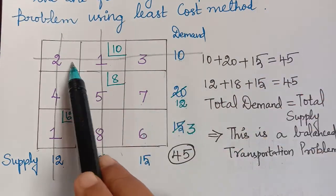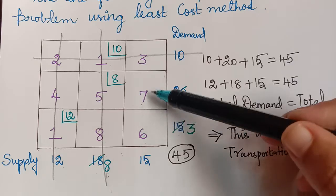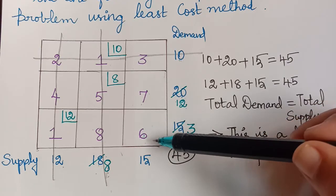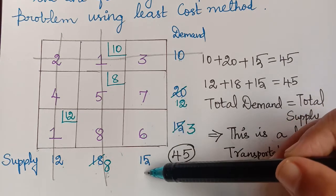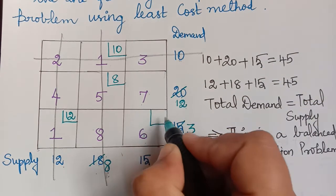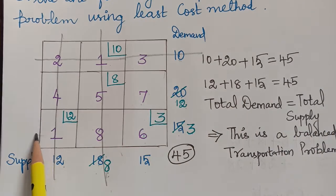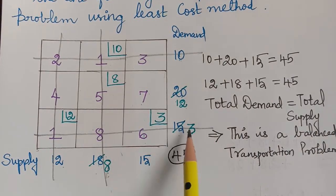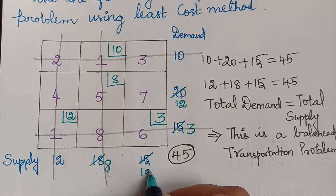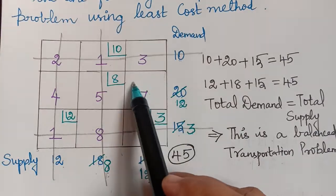Two columns and one row have been struck off, leaving two cells remaining. The value 6 is the least, so we give the allotment to that cell. The demand is 3 and the supply is 15; the minimum is 3. We give an allotment of 3, strike off that row completely, and subtract 3 from 15, leaving a remaining supply of 12.